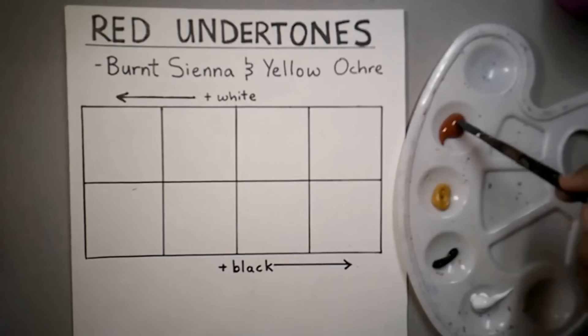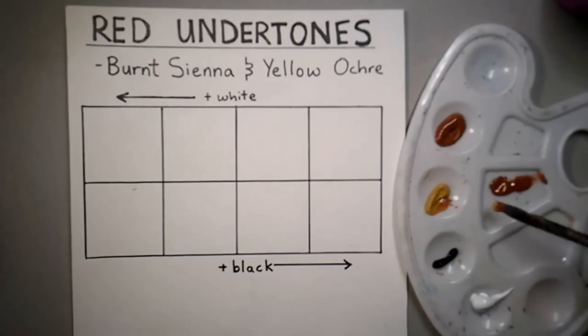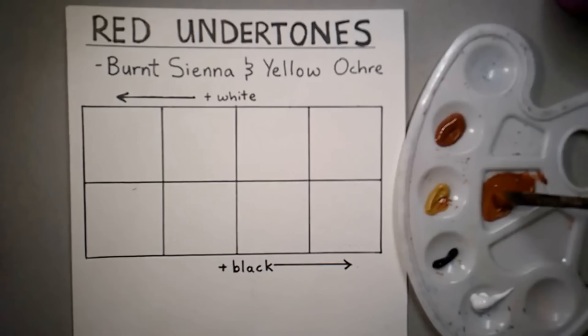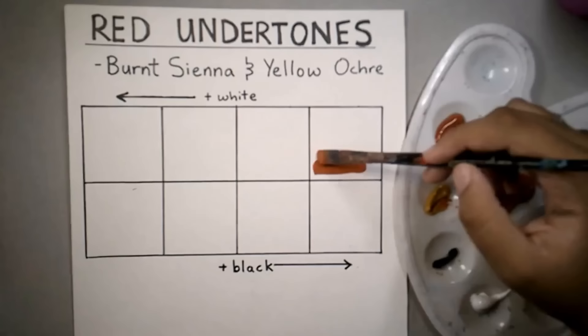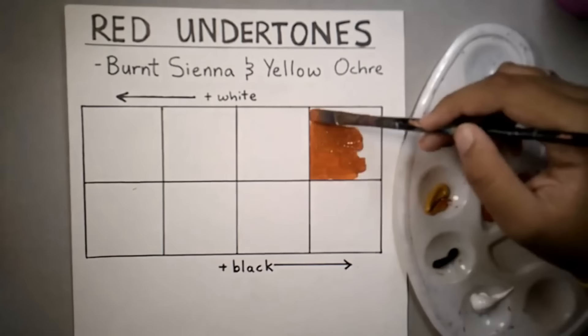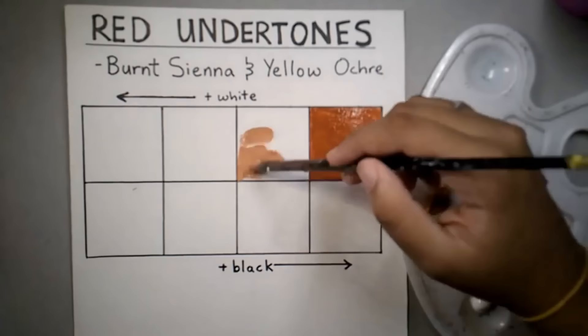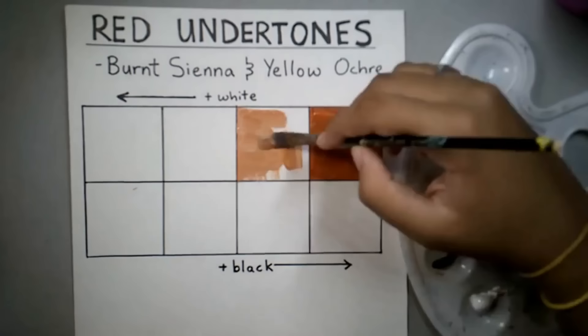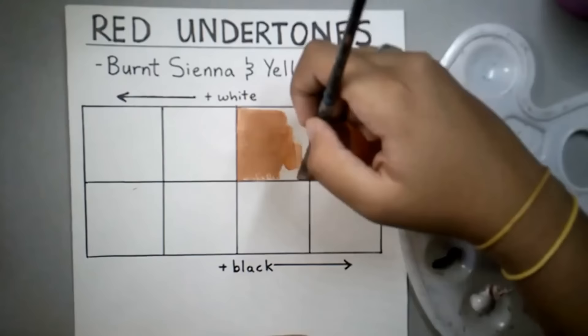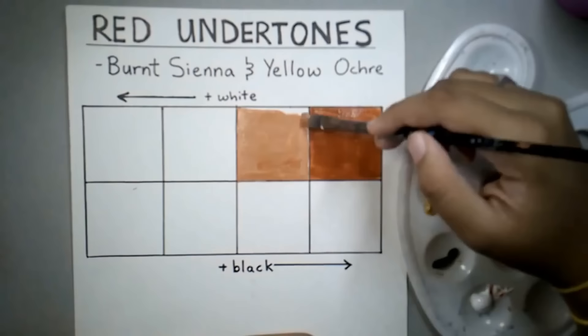You want to take the burnt sienna and use a bit more burnt sienna than yellow ochre, and just mix those colors together to get that nice red-brown color. That will be the base color. I showed the progression of the skin tone as you add white to make it lighter and black to make it darker. Note: if you've mixed white into the skin tone, don't try to darken it again by adding black because it will turn grey. Once you have white or black in it, don't go the other direction — it will turn the whole color grey.